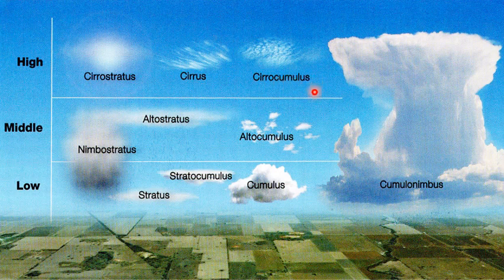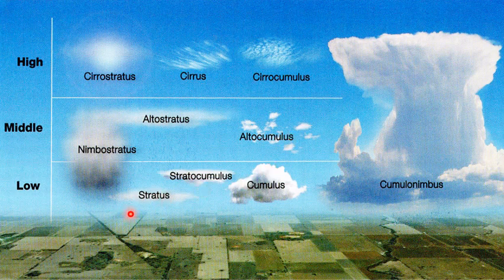Cirrus clouds are fleecy like wool, generally at high altitude. Cumulus clouds have a cauliflower-like shape, and stratus clouds have a layered structure. The base of cumulus clouds is horizontal but they have a vertical structure, with a dome-shaped top like cauliflower. They are generally termed rain-bearing clouds.